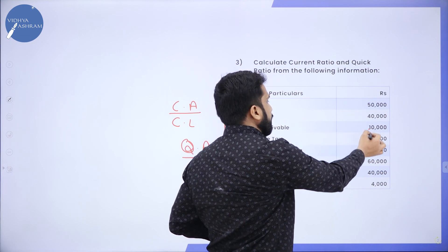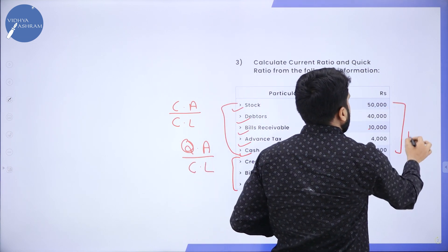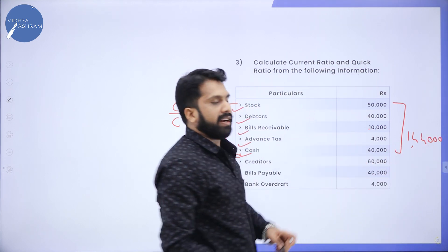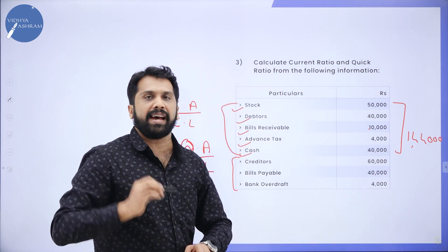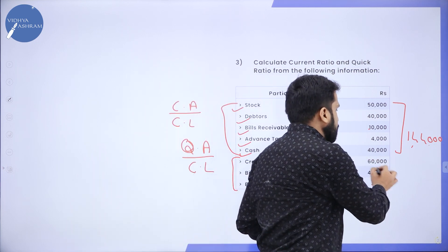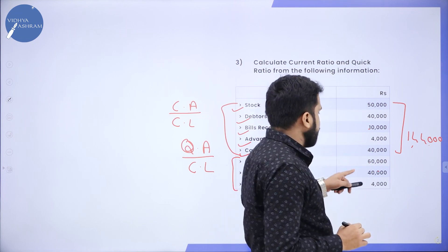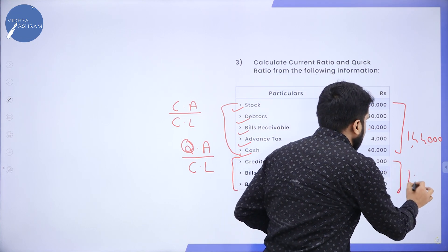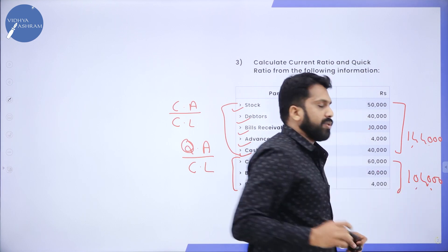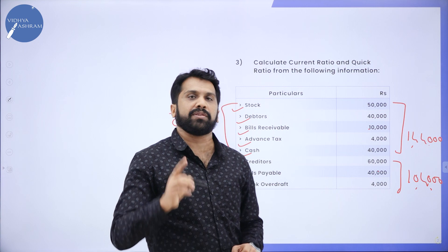The total of Current Assets comes to 1,04,000, and the total of Current Liabilities is 60,000 plus 40,000 plus 4,000, which gives 1,04,000. So you have your Current Asset total and your Current Liability total.